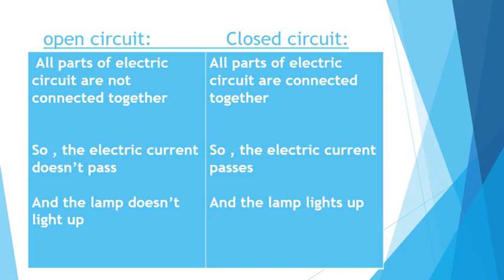If there is no electric current or no electricity, the lamp doesn't light up. So what about the closed circuit? It's exactly the opposite — opposite in everything. All parts of the electric circuit are connected together. The switch is closed, so the electric current passes and the lamp lights up as a result.